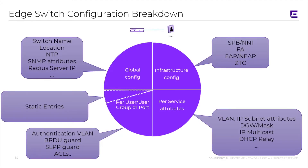Here is a look at an edge switch configuration breakdown. We can see that we have our global configs — switch name, location, SNMP, RADIUS server, and so forth. We have our infrastructure config, which is typically our interfaces and things of that nature. We have our per-service attributes — VLANs, IP subnets, gateways, multicast, DHCP relay. And then the per-user, user group, or user-port authentication. This is where we do have a lot of static entries in many instances, as well as ancillary-type protocols such as BPDU guard and SLPP guard, and of course access control lists. This is a pretty typical breakdown of what has to happen with an edge switch configuration as it's introduced into the network.